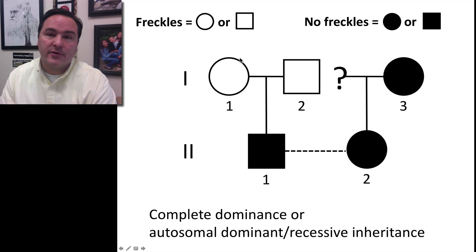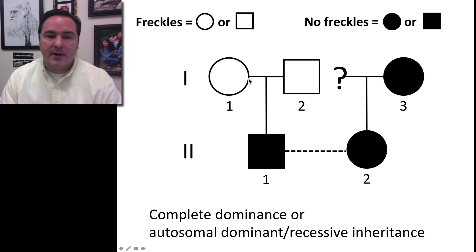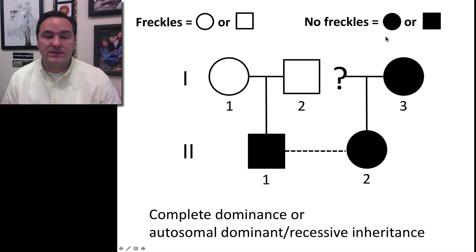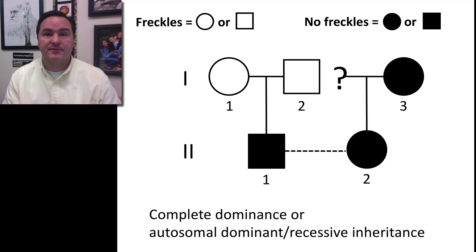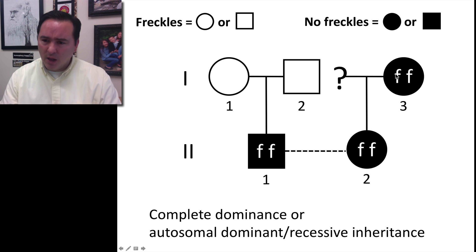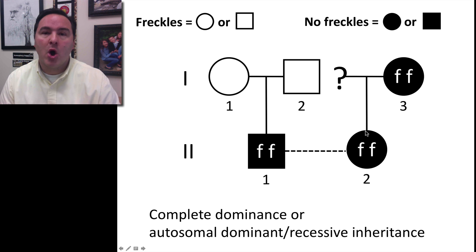One of the first characteristics we're going to look at is freckles. Both of Jack's parents have freckles, but Jack does not have freckles and neither does Jill's mom. Freckles is a gene we've seen before — it follows complete dominance, an autosomal dominant-recessive inheritance system. All of the individuals that have no freckles must be homozygous recessive for this characteristic, so they're all little f, little f.